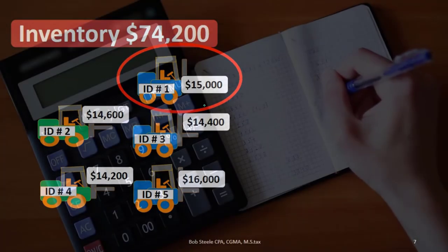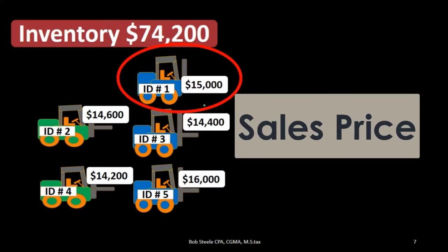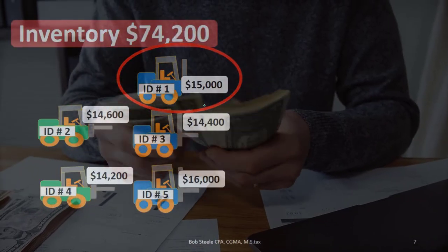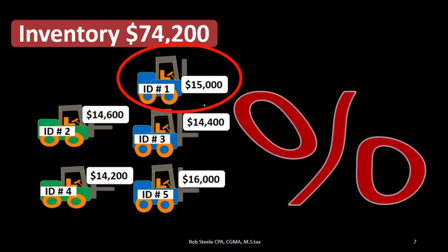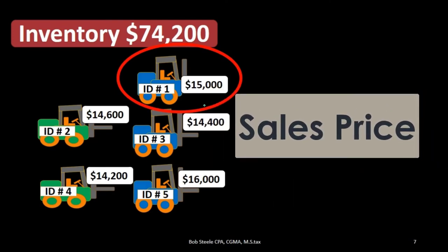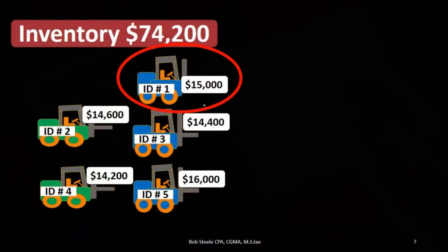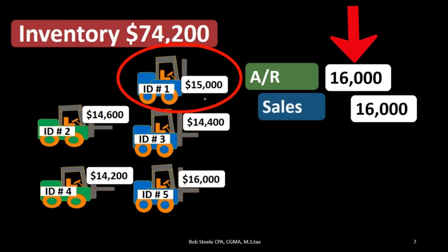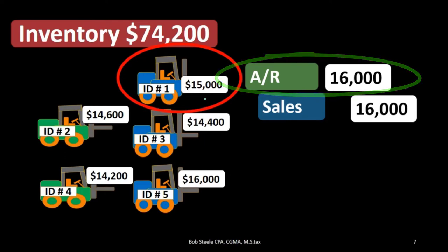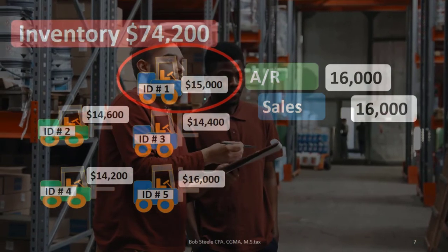Looking at the journal entries, it's important to note the distinction between cost and sales price. The sales price might be based on cost with a markup — for example, a 30% markup — but the sales price is different from what we track for inventory cost purposes. First we record the sale: $16,000 accounts receivable, and sales go up by $16,000. This has nothing to do with inventory cost in this particular entry.